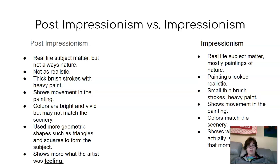The Post-Impressionist painter, like Emily Carr, used more geometric shapes, such as triangles and squares, to form their subject, and they would show more what they're feeling in their painting. Monet, as an Impressionist painter, would show more what he was seeing in his painting at that moment.